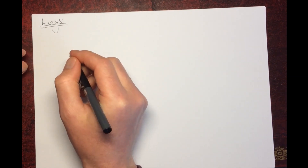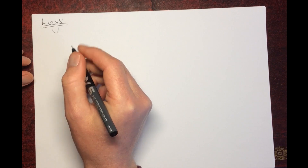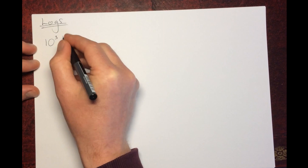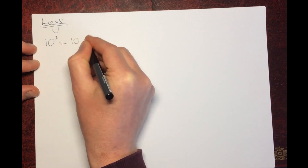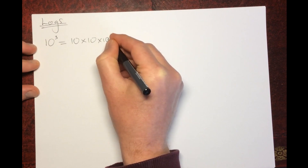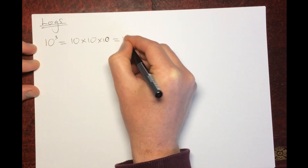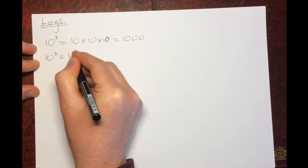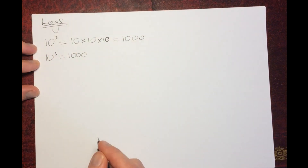We're talking here about logs. You may well have done some of this in maths. You'll know from maths that 10 to the power of 3 is equal to 10 times 10 times 10, which equals 1000. So 10 to the power of 3 equals 1000. When we talk about logs, let's go through what that means.